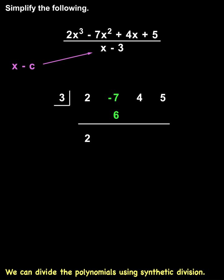Next, we add negative 7 plus 6 to get negative 1. Next, we multiply the 3 in the box times negative 1 to get negative 3, and we put the negative 3 under the 4.